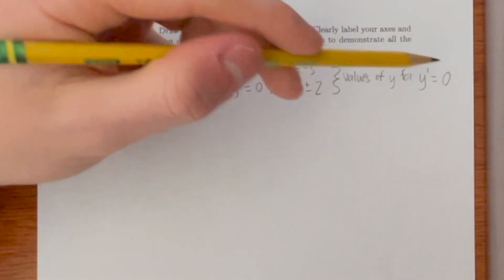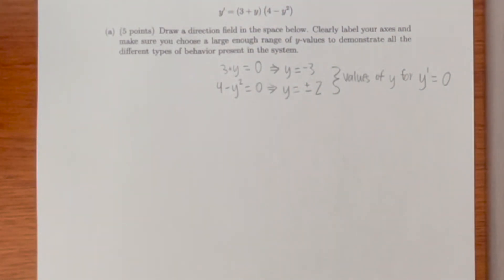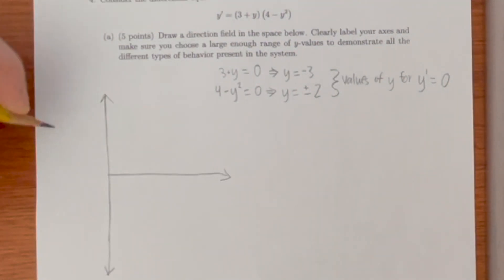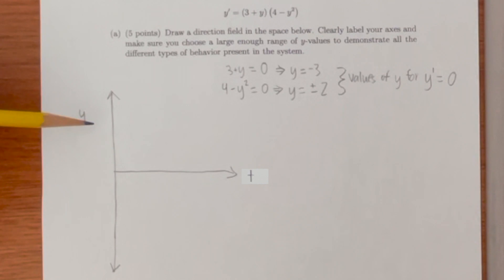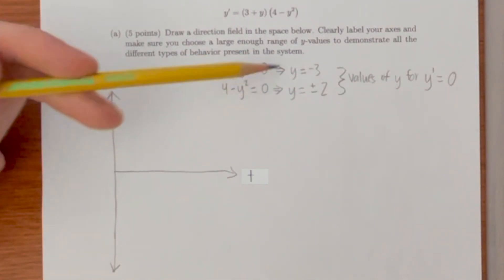Now once we have these values of y we can start drawing our direction field. Make sure to label the axes. The range of y values is a little bit lower than the minimum y value and a little bit higher than the maximum y value.